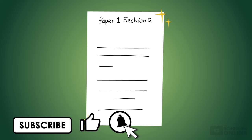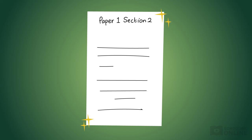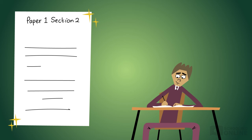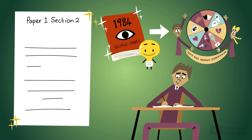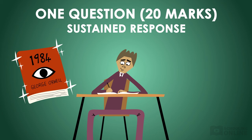In this lesson, we'll start by briefly explaining Section 2 of your Paper 1 HSC exam. In this section of the paper, you'll be asked to showcase your understanding of how 1984 represents ideas from the Texts and Human Experiences module. You will be asked one question worth 20 marks, requiring a sustained response about 1984. You will have 45 minutes to complete your response.